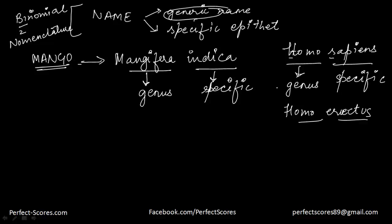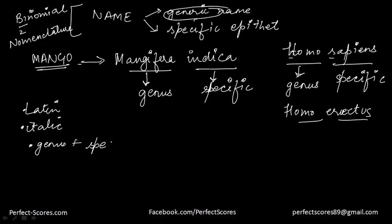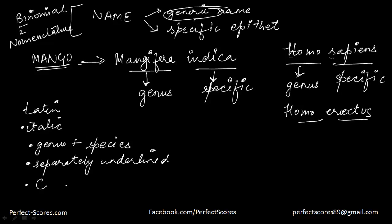A few things to know: most of these names are in Latin, either Latinized or derived from Latin. The first word refers to the genus and the second component refers to the species or specific epithet. Both words are separately underlined or printed in italics. The first word starts with a capital letter and the second word starts with a small letter.